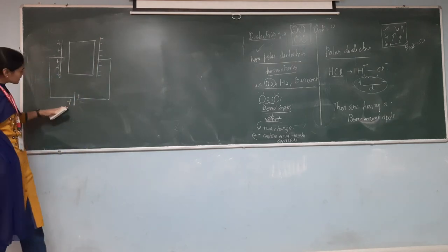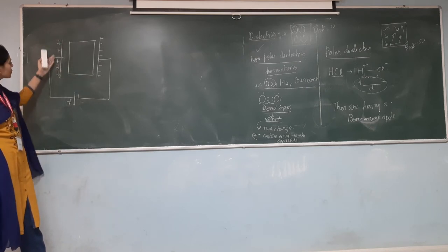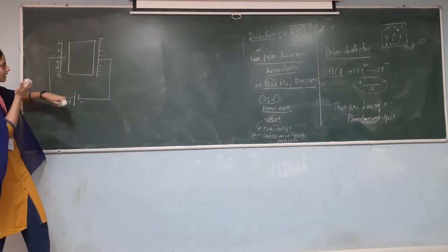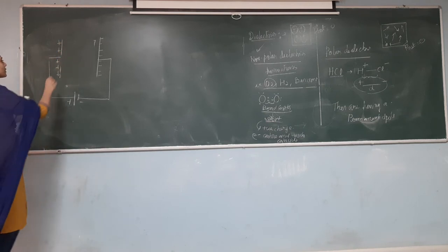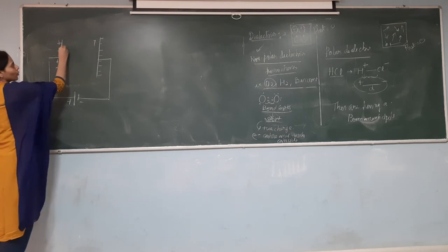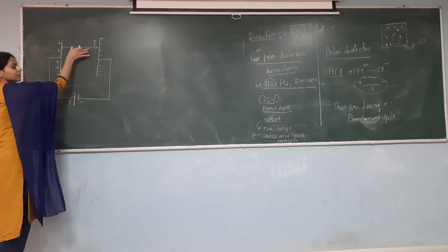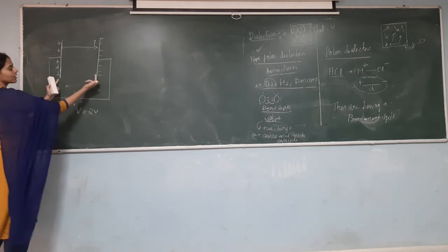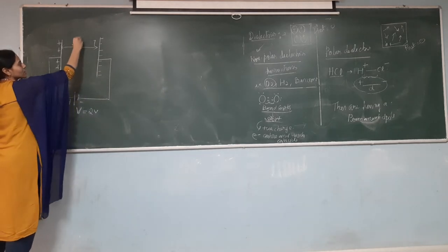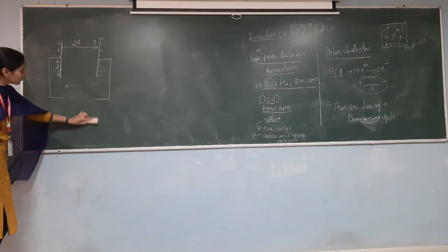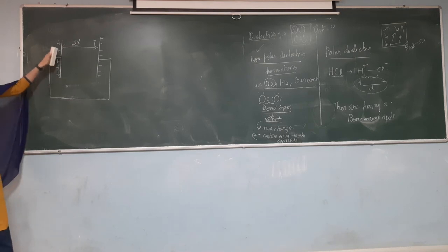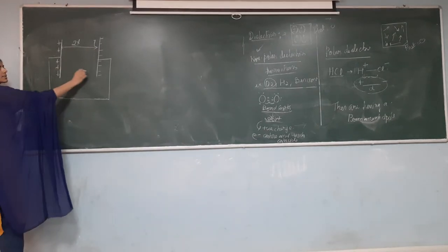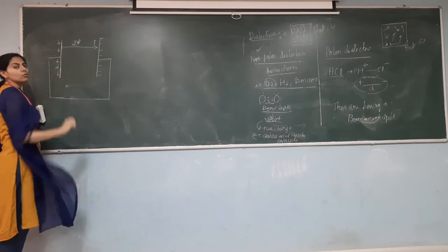The positive terminal charges one plate of the capacitor with positive charges and the negative terminal charges the other plate negatively. If we remove the dielectric, the voltage maintained between the plates equals the battery voltage — for example, a 2-volt battery creates a 2-volt potential difference. After removing the battery, the charges remain on the plates and the 2-volt potential difference is maintained.